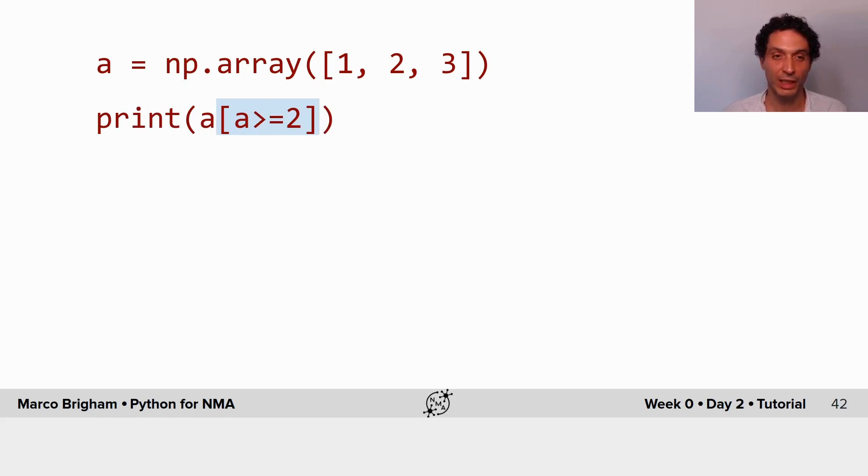And I can do it in one line. So I immediately say a and I write the boolean index inside and I get the same result. So a with a boolean index of all those values of a that are larger or equal to 2.